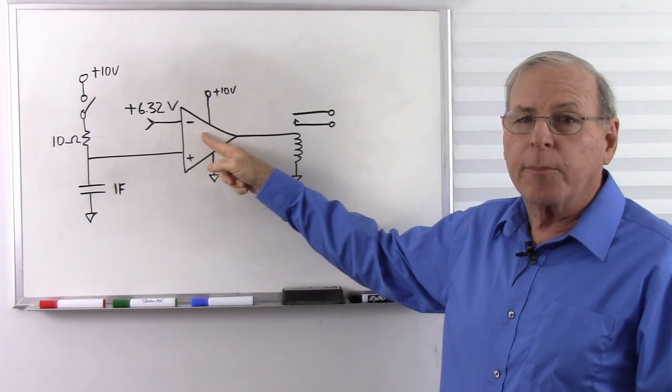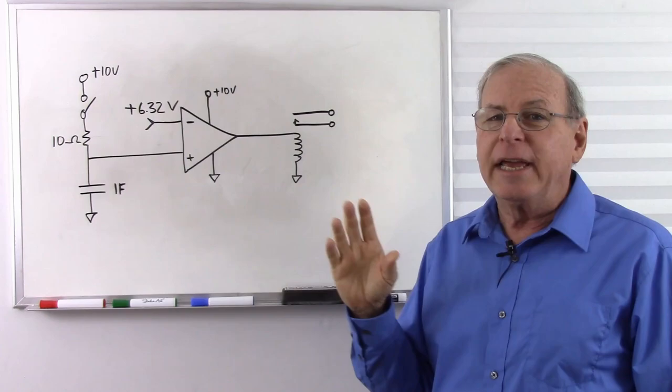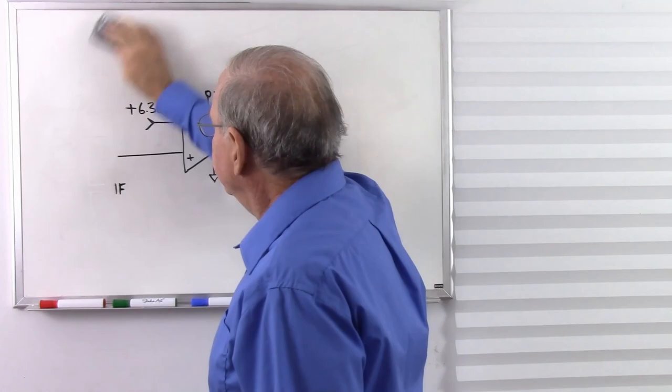Now the problem that Mr. Jovanovic is having with the circuit is he is assuming that this is an IC comparator, not an operational amplifier. A comparator and an operational amplifier are virtually identical except for the output circuit. And this is the difference.